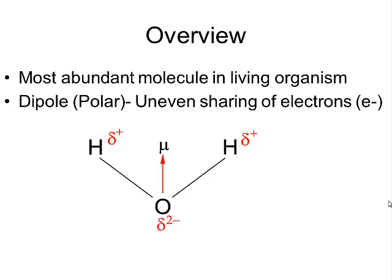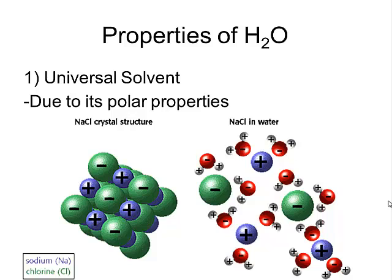The first property of water is due to its polarity, and it acts as a universal solvent. Water has its positive side and negative side, so does sodium chloride. The negative side of water is going to be attracted to the positive side of sodium, and the positive side of water is going to be attracted to the negative side of chlorine. What happens is it essentially pulls it apart, sodium apart from chlorine, which allows it to dissolve.